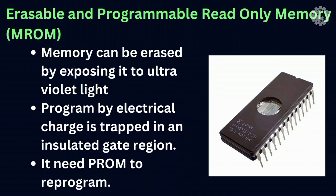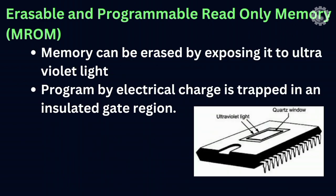The erasable and programmable read-only memory (EPROM) can be erased by exposing it to ultraviolet light for a duration of up to 40 minutes. Usually, an EPROM eraser achieves this function. During programming, an electrical charge is trapped in an insulated gate region. The charge is retained for more than 10 years because it has no leakage path. It needs a special device called a PROM programmer or PROM burner to reprogram the EPROM.